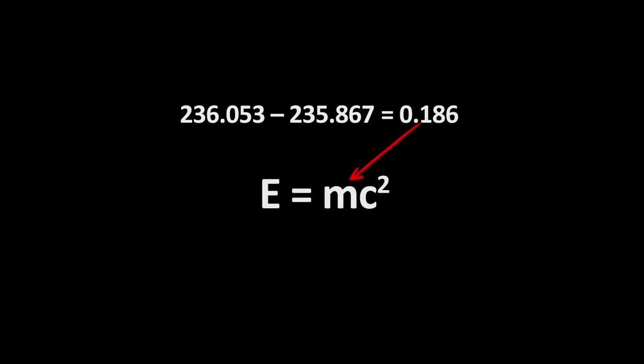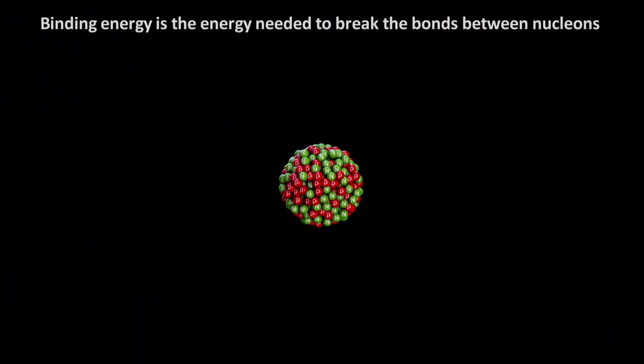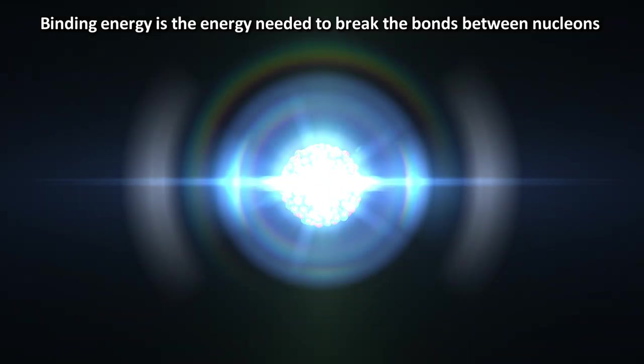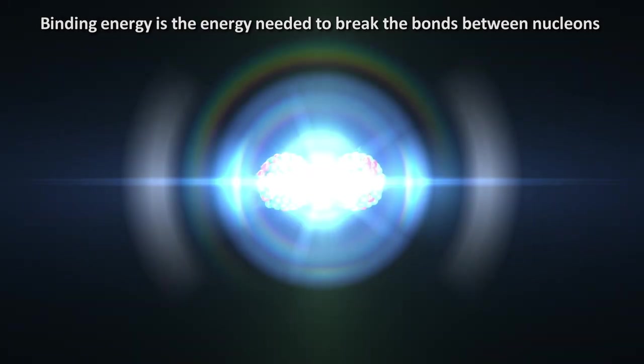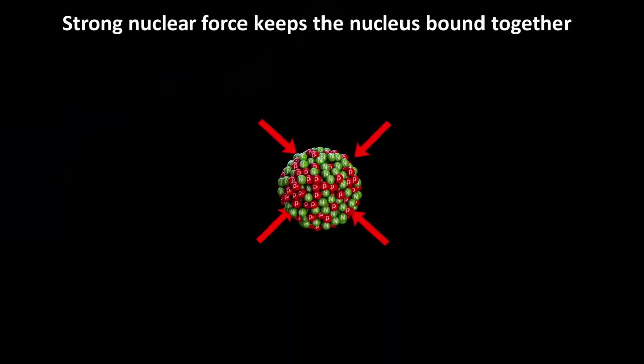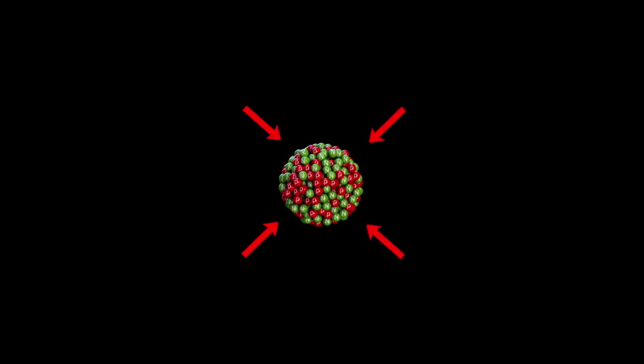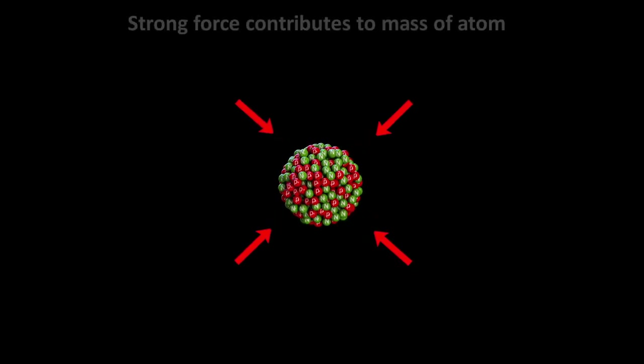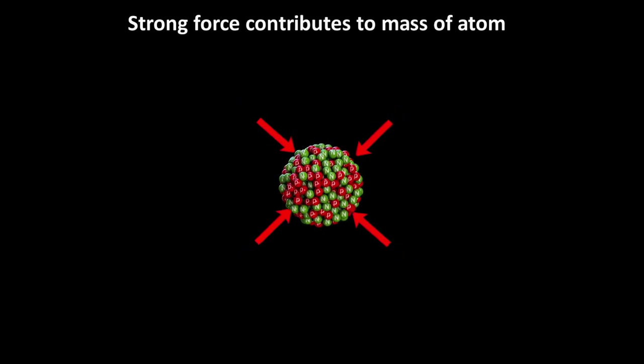Now the question is, where did this mass come from in the first place so that it could be converted to energy? As we discussed in a previous video about how the sun shines, it's all about the binding energy related to the strong nuclear force. Binding energy in this case relates to the energy needed to break the bonds between the protons and neutrons in the nucleus of atoms. This force, or energy, that keeps the protons and neutrons bound together contributes to the mass of the atom.